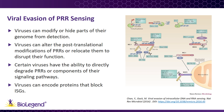Finally, viruses can also target the end product of PRR sensing, which is the ISG-encoded antiviral proteins themselves. A prime example of this is HIV, which possesses an array of viral antagonists for ISG proteins, including its VPU protein that targets the ISG tetherin for degradation. The effectiveness of a virus's methods for evading host detection is a major contributor to its replication success within a host species.